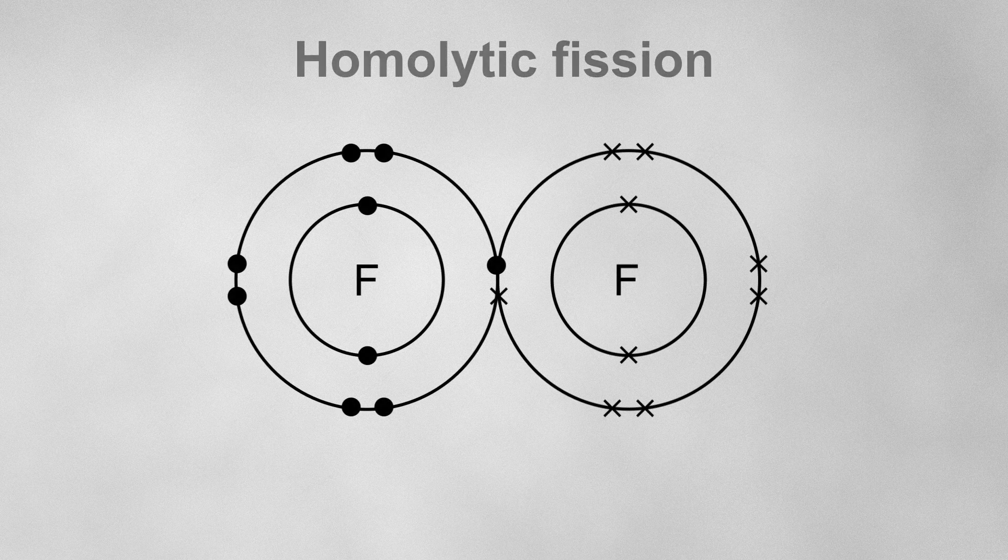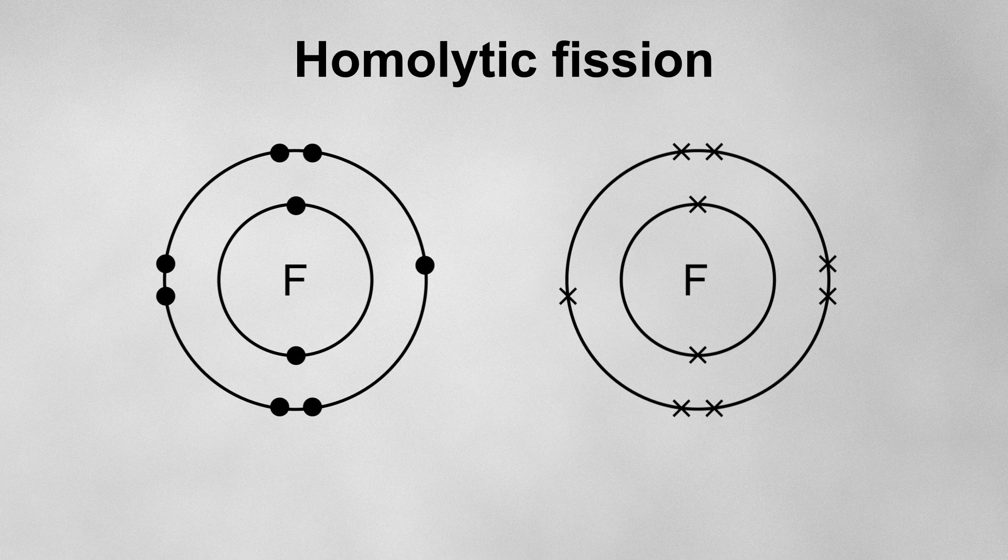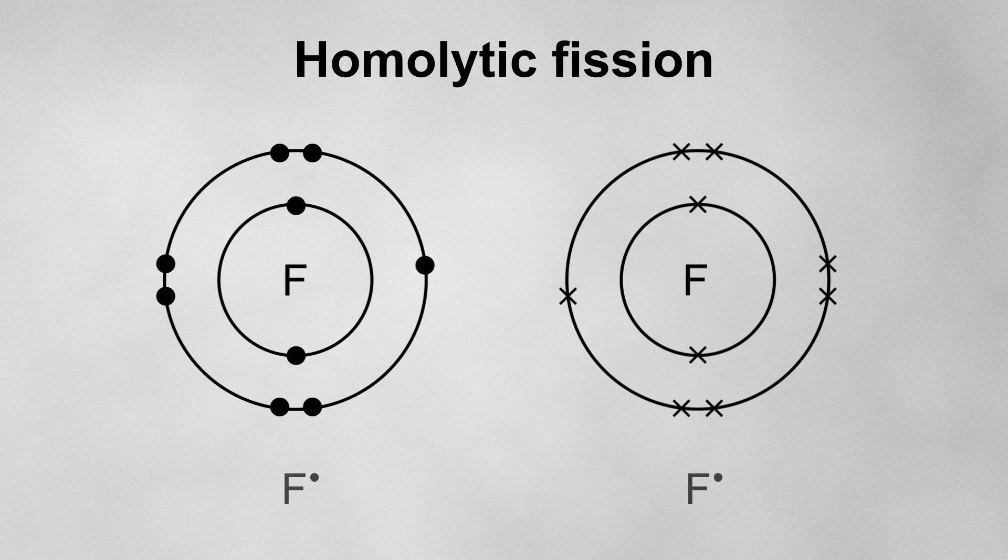The second way is homolytic fission. This is where one electron from the bonding pair goes to one atom, and the other goes to the other atom. This results in two neutral free radicals, each with an unpaired electron.